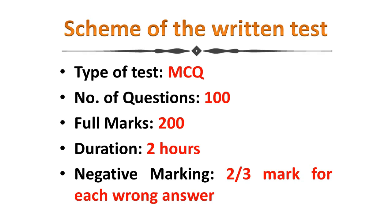There will be negative marking and each question will carry a mark of two, meaning the full mark will be 200. For each wrong answer, the deduction will be two-thirds of the marks allocated — that means for three wrong answers, two marks will be deducted. So this is all about the scheme of the examination.